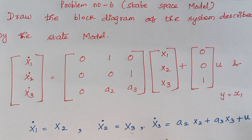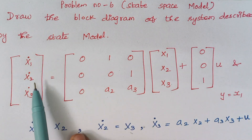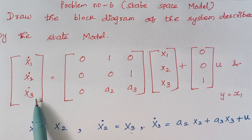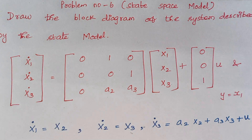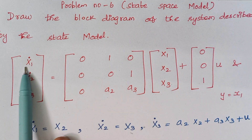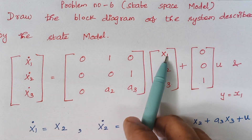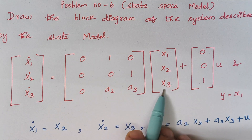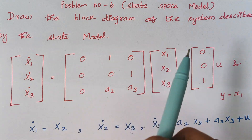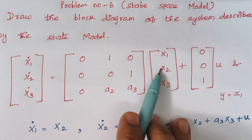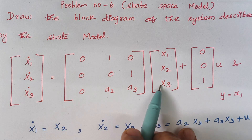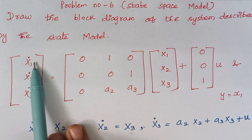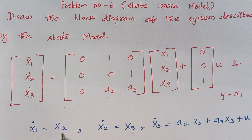The first step is to frame expressions for x1_dot, x2_dot, and x3_dot. So x1_dot is nothing but 0 into x1 plus 1 into x2 plus 0 into x3. So the answer is: 0 into x1 is 0, 1 into x2 is x2, and 0 into x3 is 0. Therefore x1_dot is equal to x2.